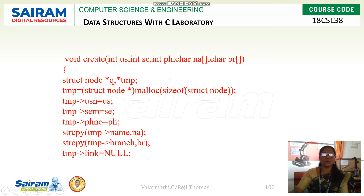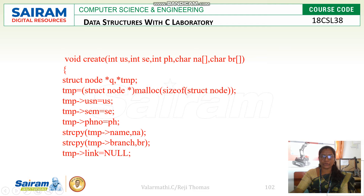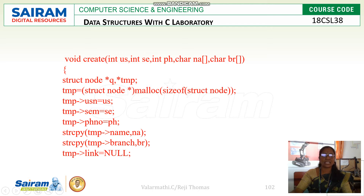The first task is to create a new singly linked list. We have the structure variables here: US is USN, SE is semester, PH is phone number, NA is name, and BR is branch. The local variables are declared here — these are entirely different from the structure member variables USN, semester, phone number, and name. Then we move on to the creation of the structure: struct node, star Q and star TMP.